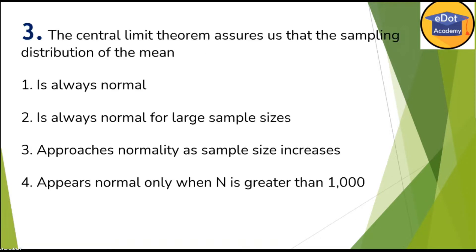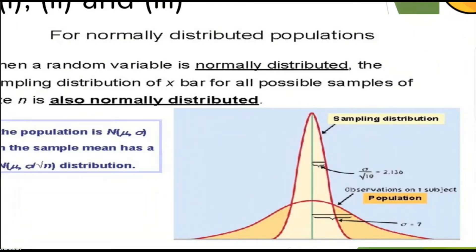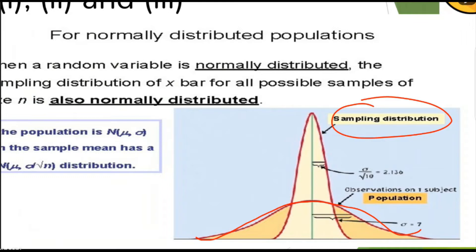Moving ahead: the Central Limit Theorem assumes that the sampling distribution of the mean follows a certain form. I'll show you the Central Limit Theorem figure so you can understand the concept. Two curves are drawn: the big curve with more height is your sampling distribution, and the flatter one is the population distribution. This line represents the mean — both the mean of the population and mean of the sample coincide here.